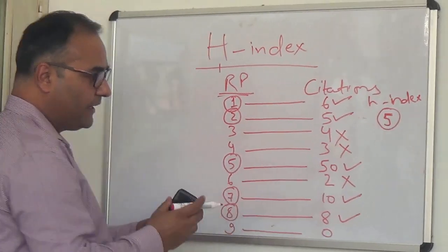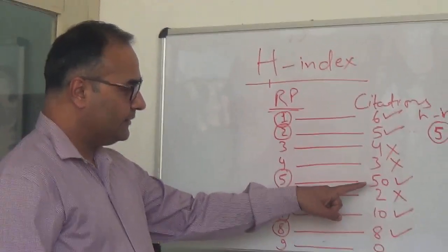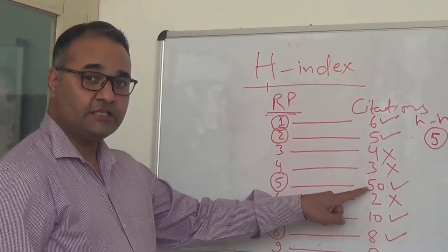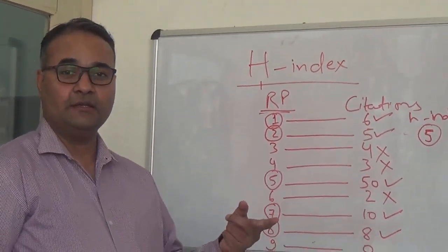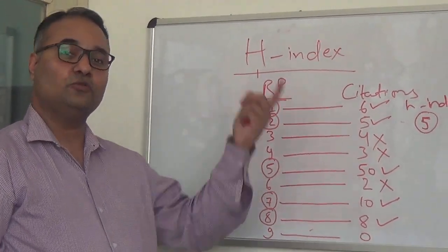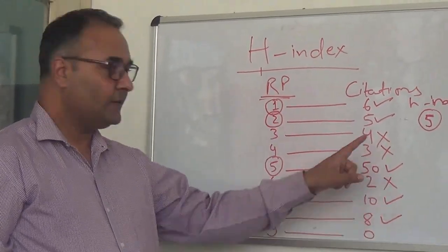The purpose of taking this particular example was, although the citation for one particular research paper is 50, that doesn't mean that the H-index will also increase to that order. It will still remain 5 only.